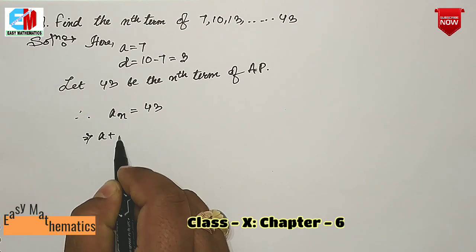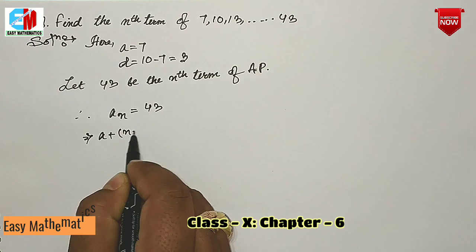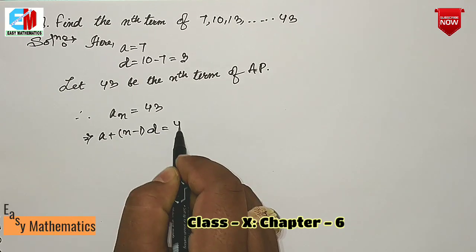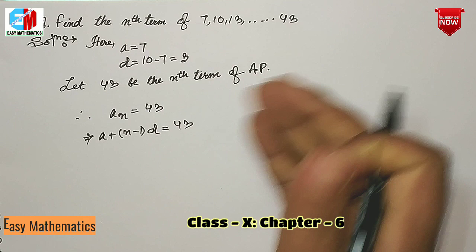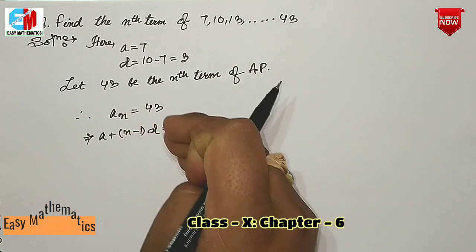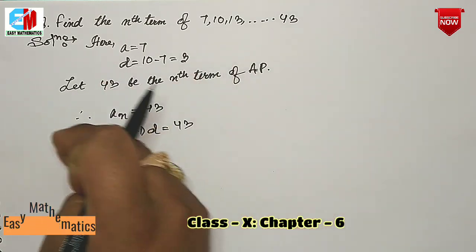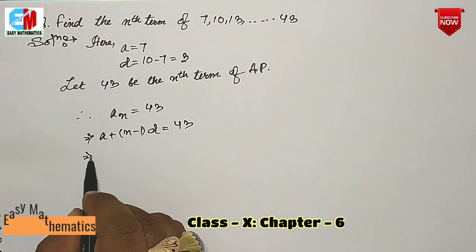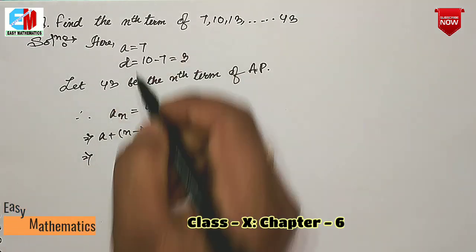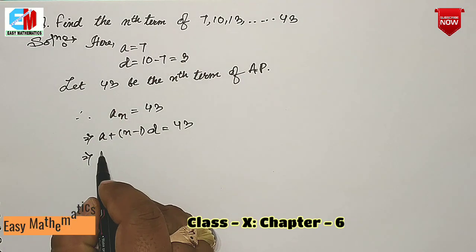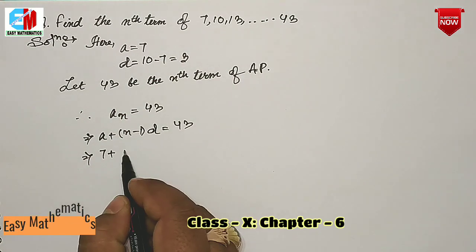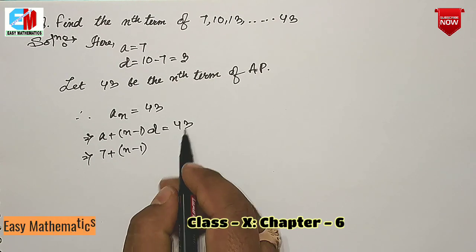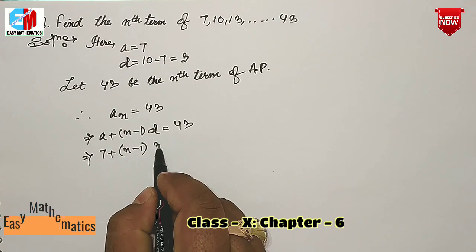We are given that a plus n minus 1 times d is equal to 43. Using the formula, we can write a plus n minus 1 times d equals 43.